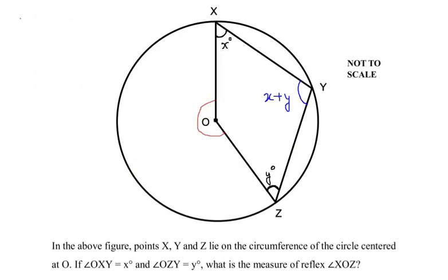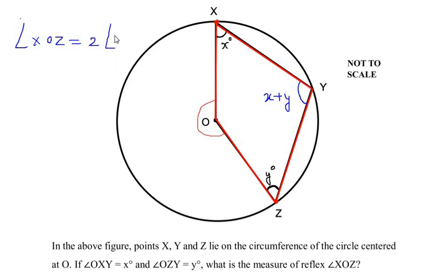Now let us consider points X and Z on the circumference of the circle. These two points make an angle at the center at point O, and the same two points make an angle at the circumference at point Y. So using the theorem, the reflex angle XOZ equals two times the angle at the circumference, which is angle XYZ. We have the value of XYZ as x plus y degrees, so substituting we get two times (x plus y), and expanding the brackets we get 2x plus 2y.